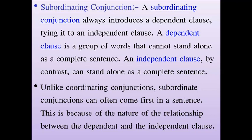Unlike coordinating conjunctions, subordinating conjunctions can often come first in a sentence. This is because of the nature of the relationship between the dependent and independent clause. Subordinating conjunctions do not work the same way as coordinating conjunctions — they often appear at the very beginning of a sentence, starting the sentence in most cases.